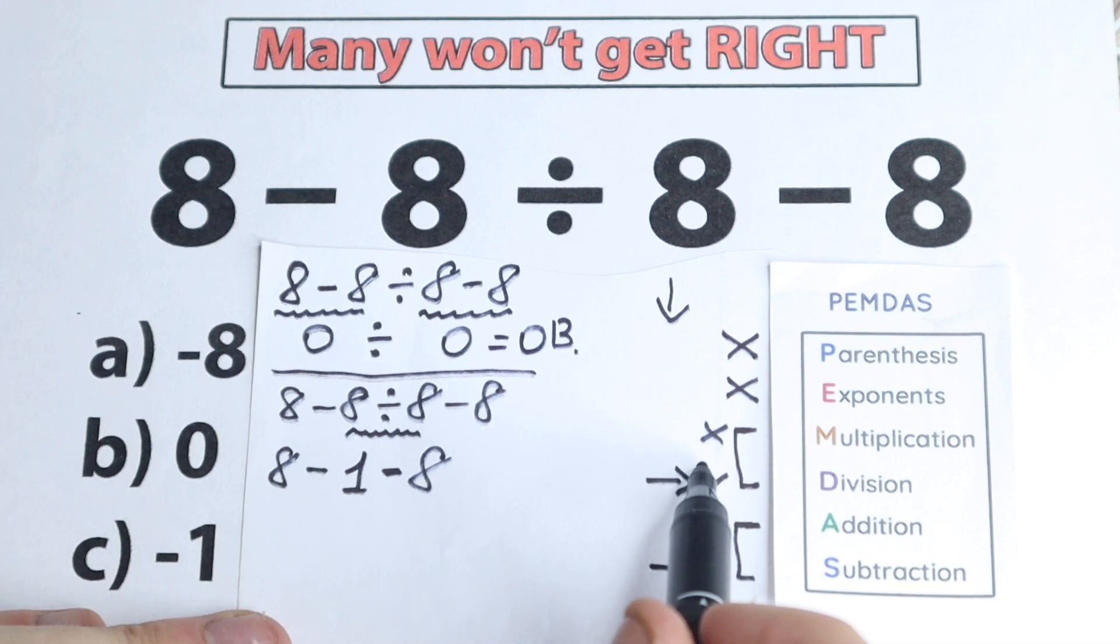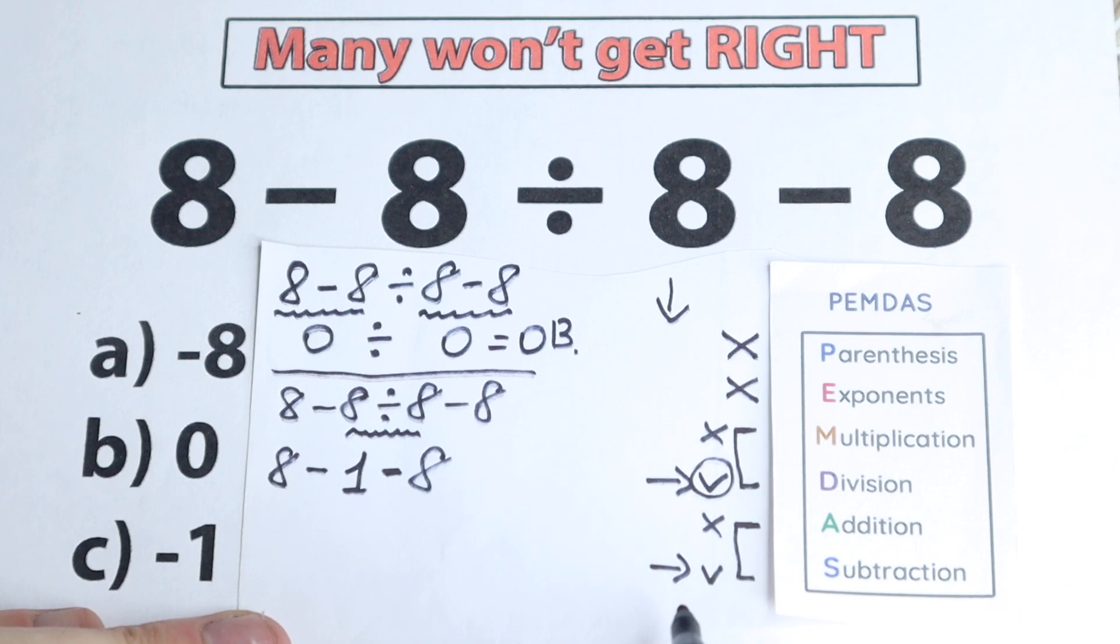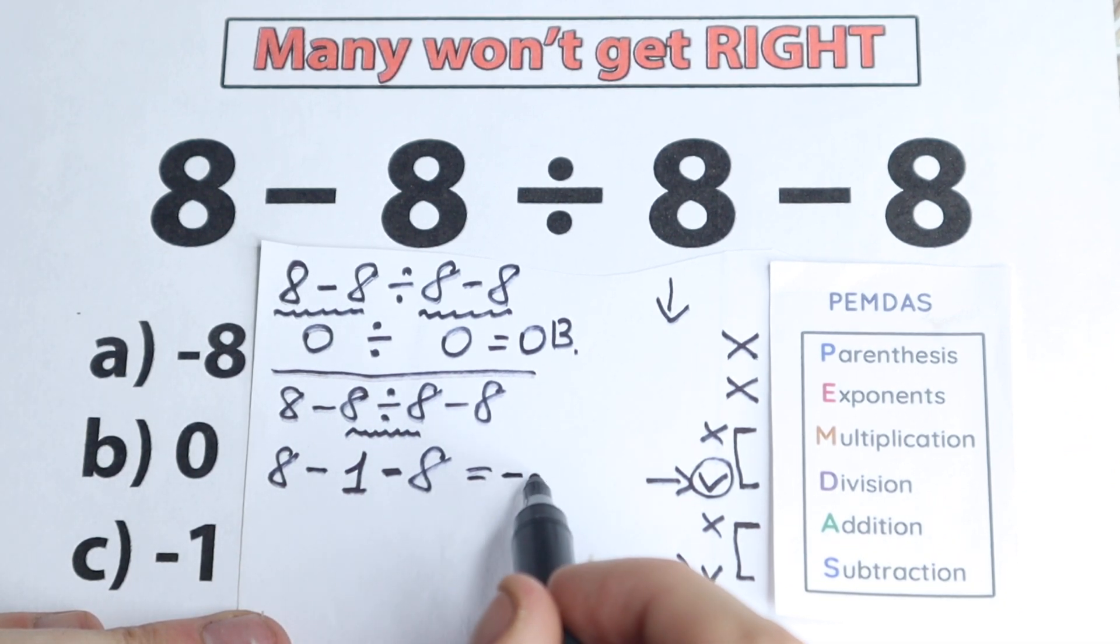So we complete this step with division, so yeah, we complete it. And we have this subtraction part. So we have like 8 minus 1 minus 8, which is equal to minus 1, and we have this option, option C.